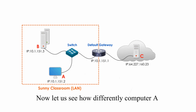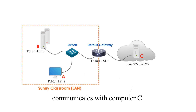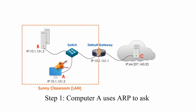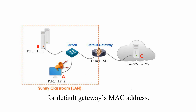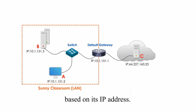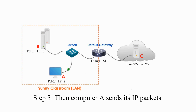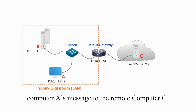Now let's see how differently computer A communicates with computer C, since computer C is on a different network. Step 1: Computer A uses ARP — the same program — to ask for the default gateway's MAC address based on the default gateway's IP address. Step 2: The default gateway replies to computer A with its MAC address. Step 3: Computer A sends its IP packets to the default gateway, which delivers computer A's IP packets to the remote computer C.